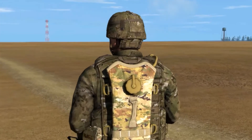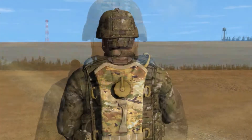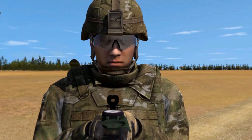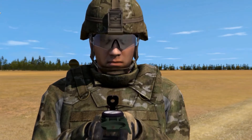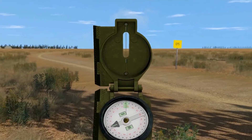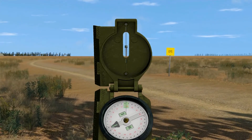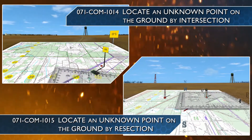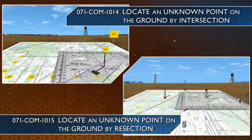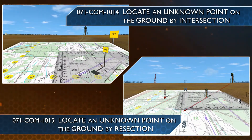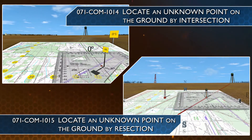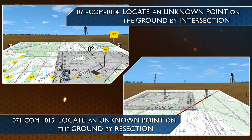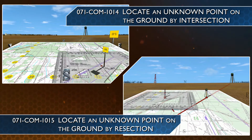If there are no recognizable terrain features but a compass is available, you may have to use field expedient methods to orient your map. Refer to task Locate an Unknown Point on the Ground by Intersection, and Locate an Unknown Point on the Ground by Resection, for some examples of field expedient methods.